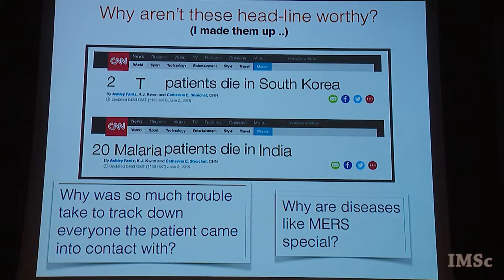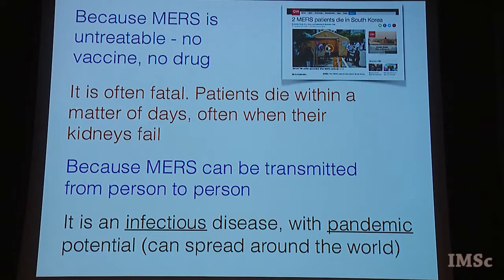Why was so much trouble taken to track down everyone the patient came into contact with? We now know where each of these people went, who they infected, whose wife went where, who went to China. The Korean authorities kept careful track of all of them. So why are diseases like MERS special? That's the question we want to ask. The reason is that MERS is untreatable — there is no vaccine and no drug for it.